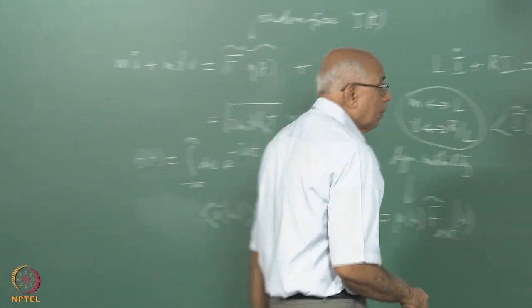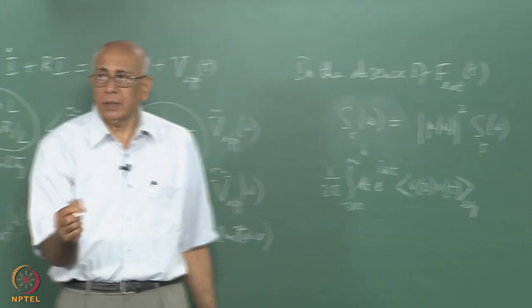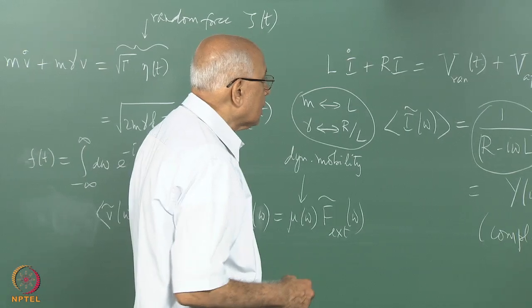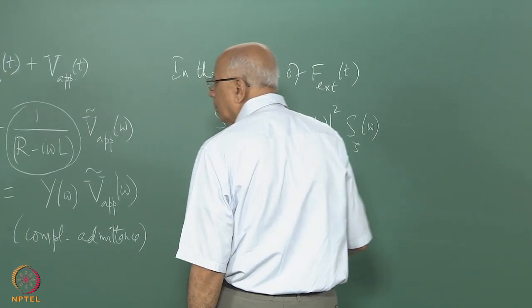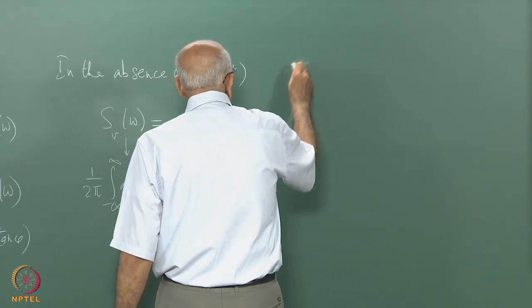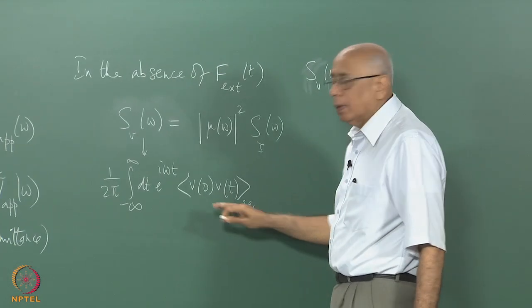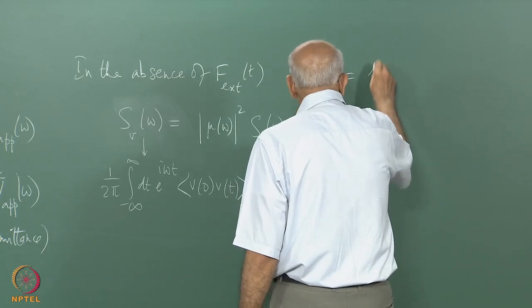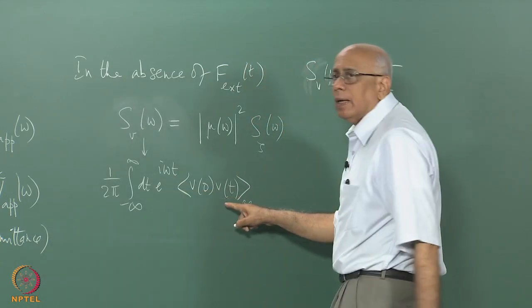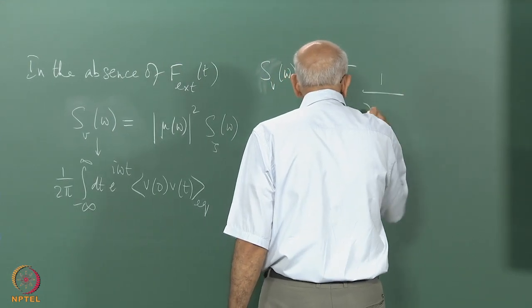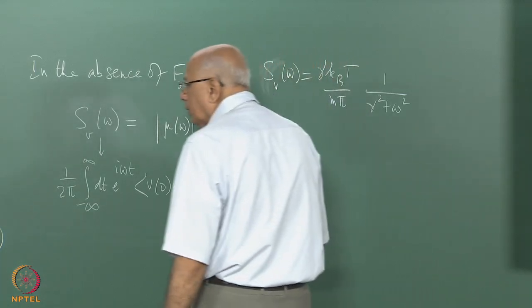There is a deep relationship between the fluctuations in the absence of the force and the average response in the presence of the force, to first order in the external force — which is why we keep saying linear response. We can go a step further. We already found S_V(ω), and by symmetry it was (1/π) × (k_B T/m) × γ over (γ² + ω²). Now if you ask what is the real part of μ(ω), where μ(ω) = 1/[m(γ − iω)], the real part gives γ/m divided by (γ² + ω²).